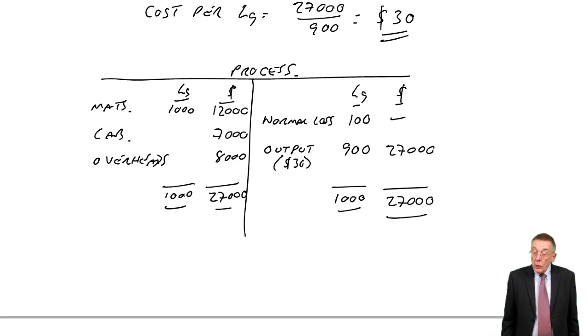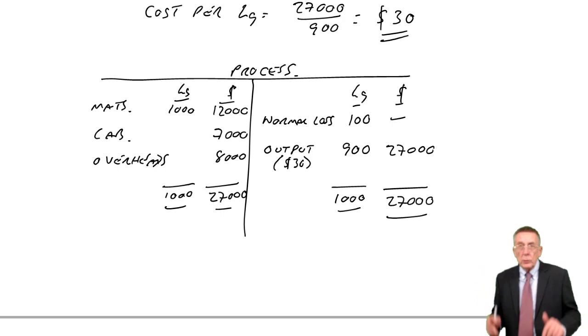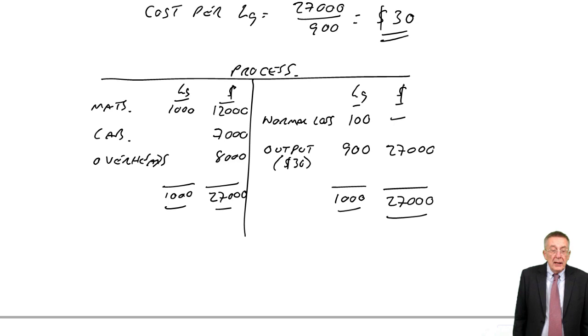Okay, that was nice and easy. All right, well, let's make it a bit more fun. If you turn over, it says normal loss with a scrap value. Now the word normal loss does not always mean that it actually disappears like steam when we're making beer. We also use the word loss if some of the units are damaged and aren't good output.